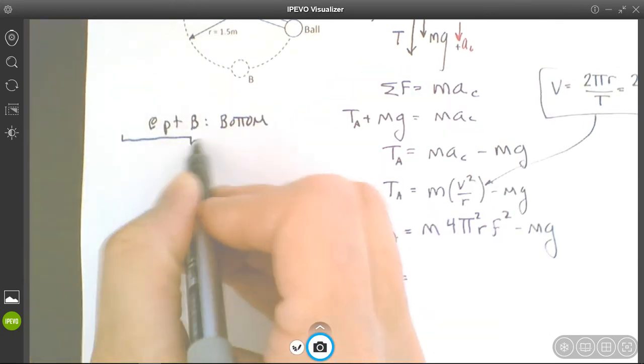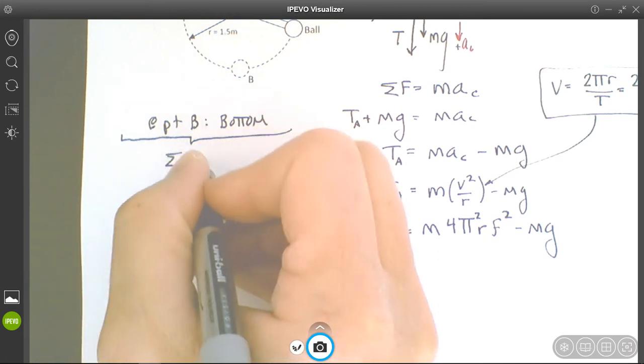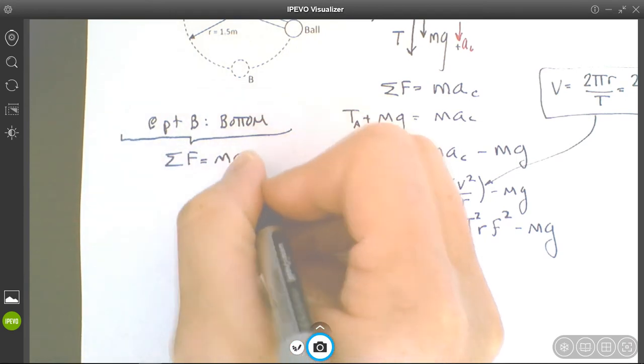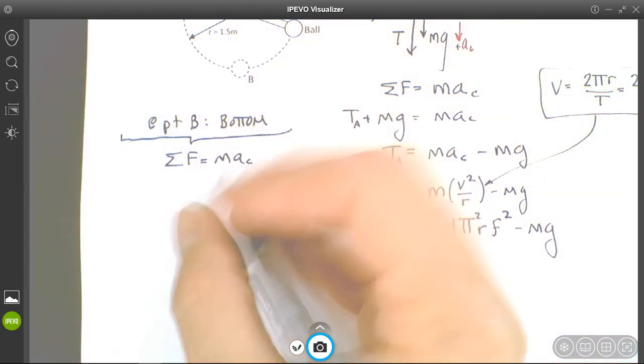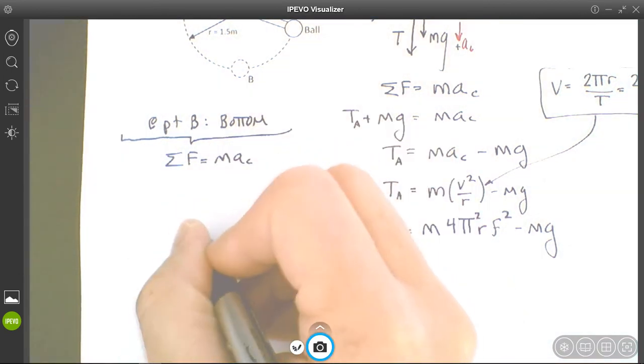At the bottom, sigma F equals m ac. It's centripetally accelerating. What's the free body diagram? Well, at the bottom you've got the mass...